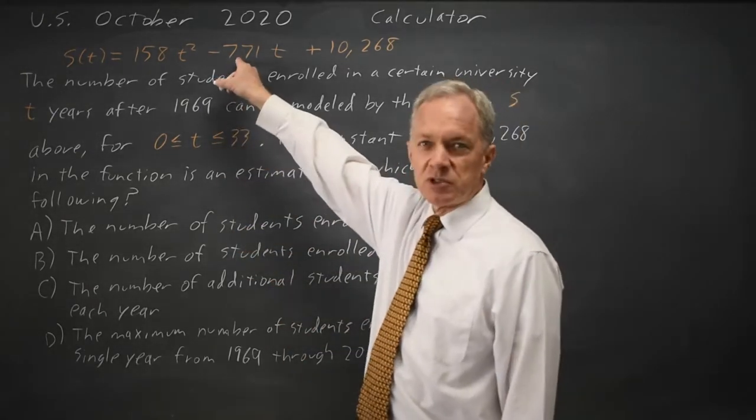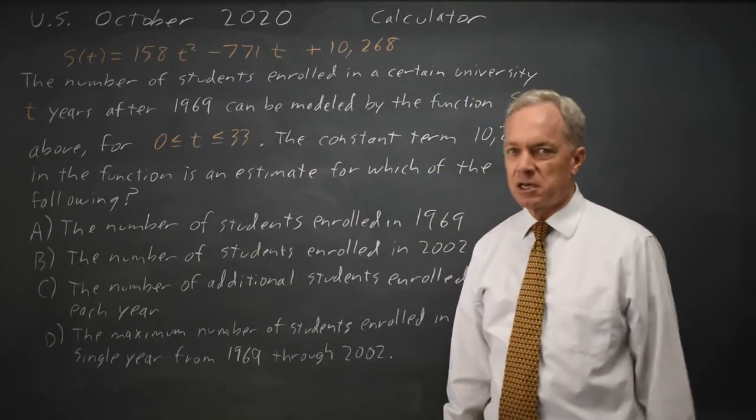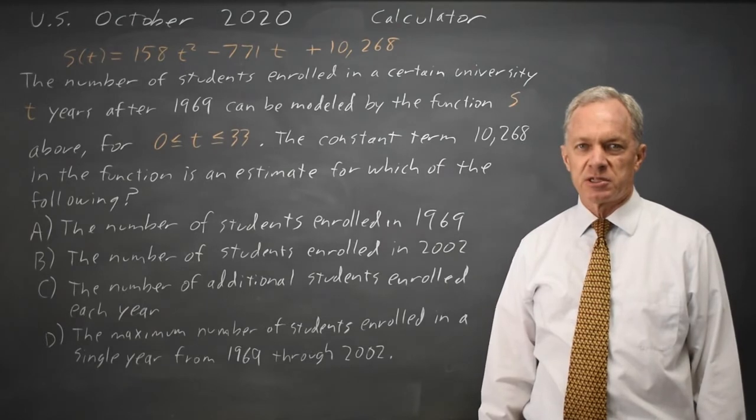We're given an equation for the number of students in university two years after 1969 and they're asking us to interpret the constant term in this equation.